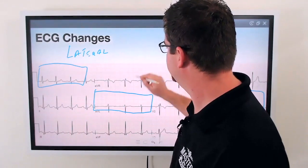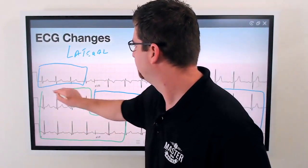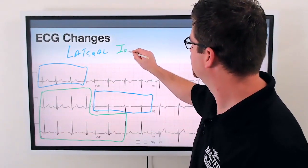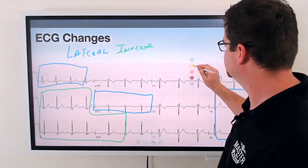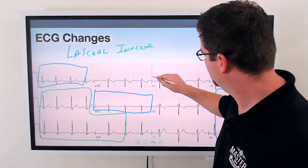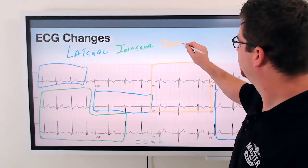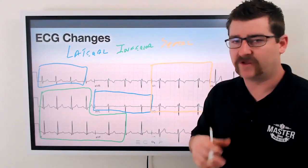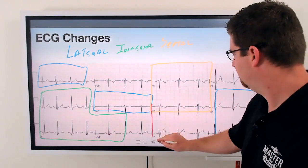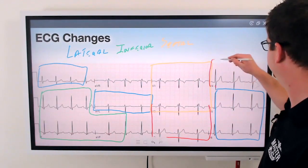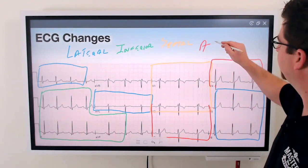Leads two, three, and AVF form our inferior leads. V1 and V2 are the septal leads — septal referring to the septum of the heart. And leads V3 and V4 — sometimes described as V2 through V5 — are going to be our anterior leads.